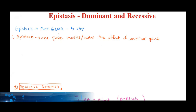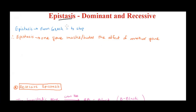Welcome back. Today we are talking about epistasis. The word epistasis means to stop. What happens in epistasis is one gene would affect or will not allow the expression of another gene. For example, if we have gene A and gene B, gene A will not allow the expression of gene B — gene A would hide or mask the effect of gene B. That phenomenon is called epistasis.